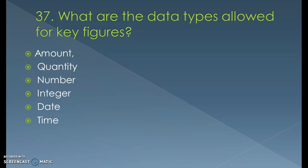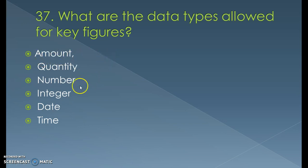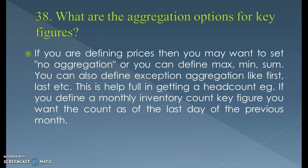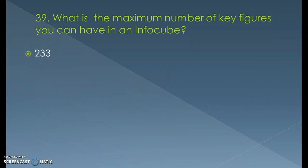For the data types allowed for key figures, we have amount, quantity, number, integer, date, and time — these are the six data types for key figures. Remember, if a key figure is of type amount or quantity, it must be complemented with currency or unit respectively. The aggregation options for key figures include no aggregation, maximum, minimum, and sum. You can also define exception aggregation like first or last, which is helpful for getting a head count. For example, if you define a monthly inventory count key figure, you may want the count as of the last day of the previous month.